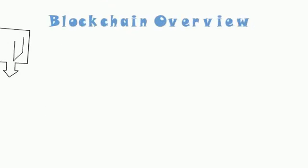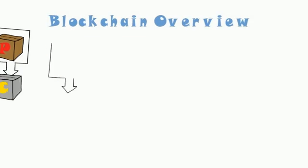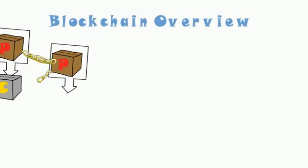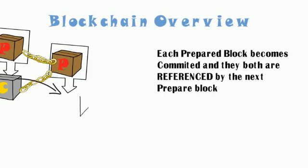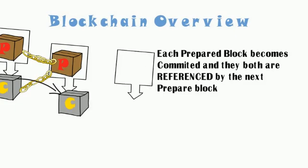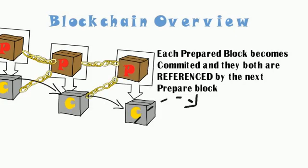Lastly, validators cannot prepare more than once per position on the blockchain. These slashing conditions are all that is needed to ensure proof-of-stake consensus, with at least two-thirds of validator votes referencing the previous prepare and commit blocks, creating the blockchain.